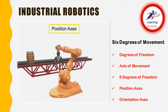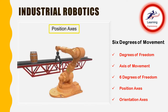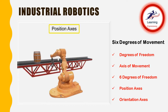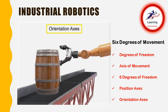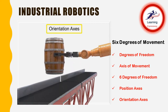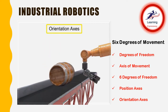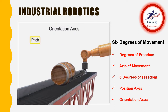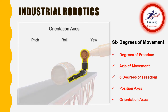While the position axes locate the tool in the work area, the orientation axes help orient the tool in relation to the work piece. The types of movement along orientation axes are defined as pitch, roll, and yaw. These movements all occur from the same joint, the wrist, but along three distinct axes.